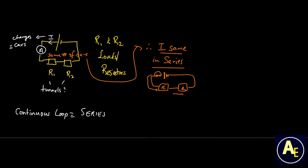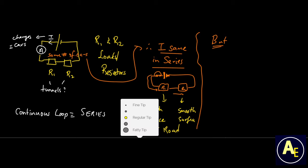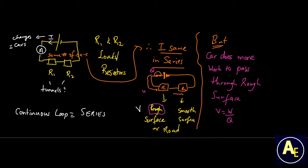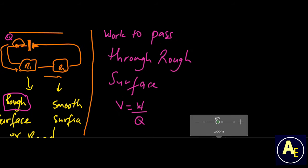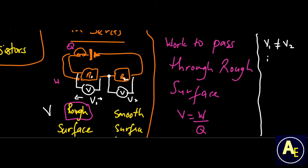But what if both tunnels were made up of different surfaces — perhaps one being smooth and the other rough? Wouldn't the cars passing through the rough surface do more work? Similarly, the charges must do more work to pass through that resistor. As a result, the voltage across both resistors will be different in a series circuit.